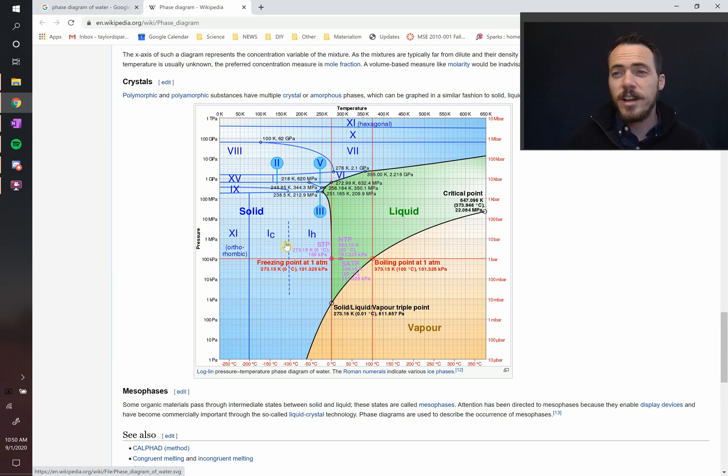There are 11 different types of ice, meaning that the water molecules can be put together in different ways to form different types of ice. Then you've got your green liquid region and your orangish vapor region.